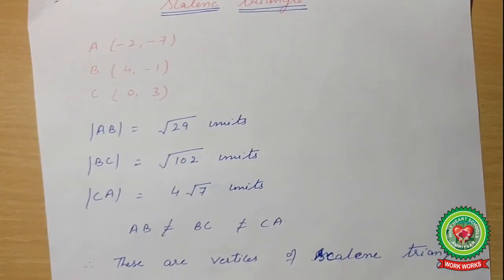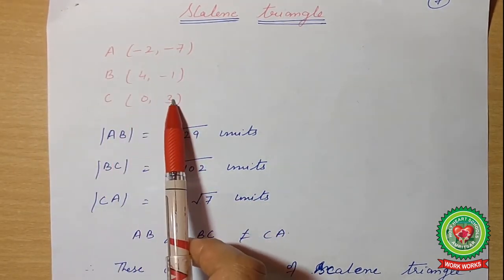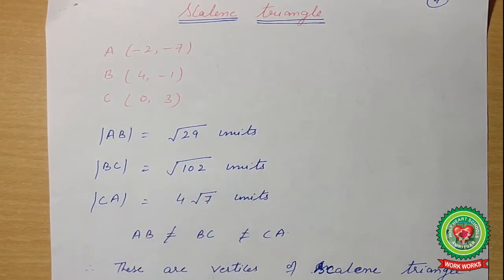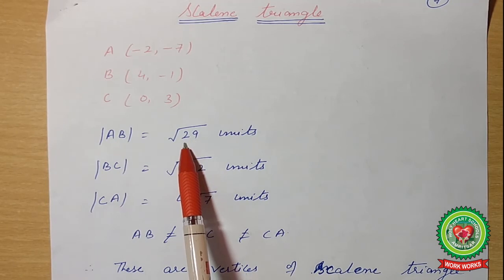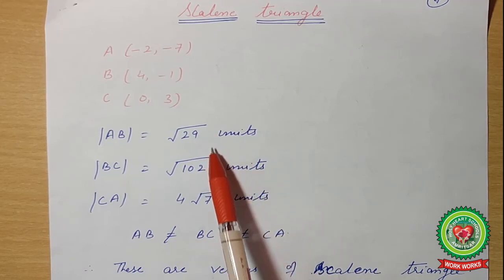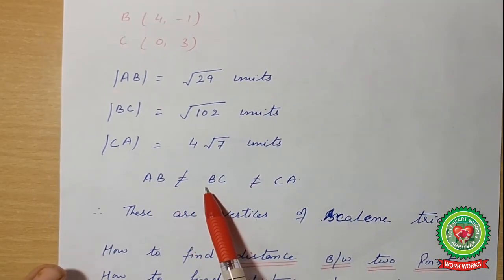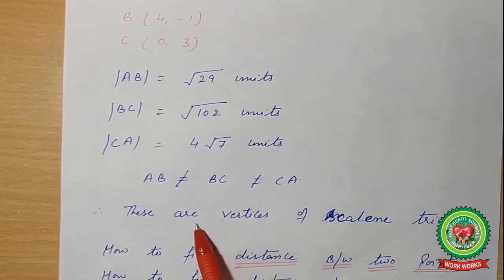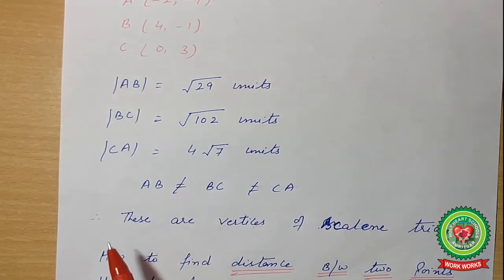For the scalene triangle, suppose you have vertices A(−2, −7), B(4, −1), C(0, 3). Applying the distance formula, you get AB = √129 units, BC = √102 units, CA = √407 units. All values are different — AB ≠ BC ≠ CA. Therefore, these are vertices of a scalene triangle. When all sides are unequal, the triangle is called a scalene triangle.